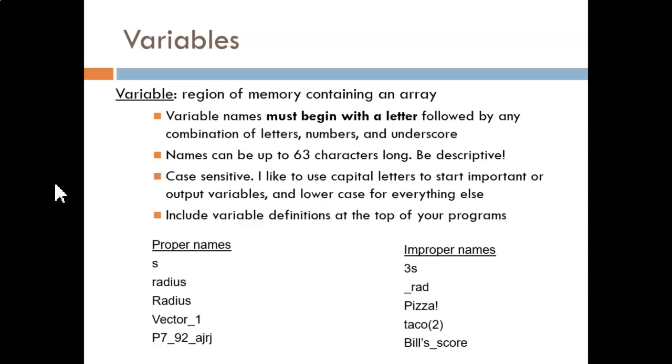Here we see the rules for variable names. Variable names must begin with a letter. After that, they can use any combination of letters, numbers, or the underscore character. That is the only special character allowed. No spaces, no parentheses, no dashes.